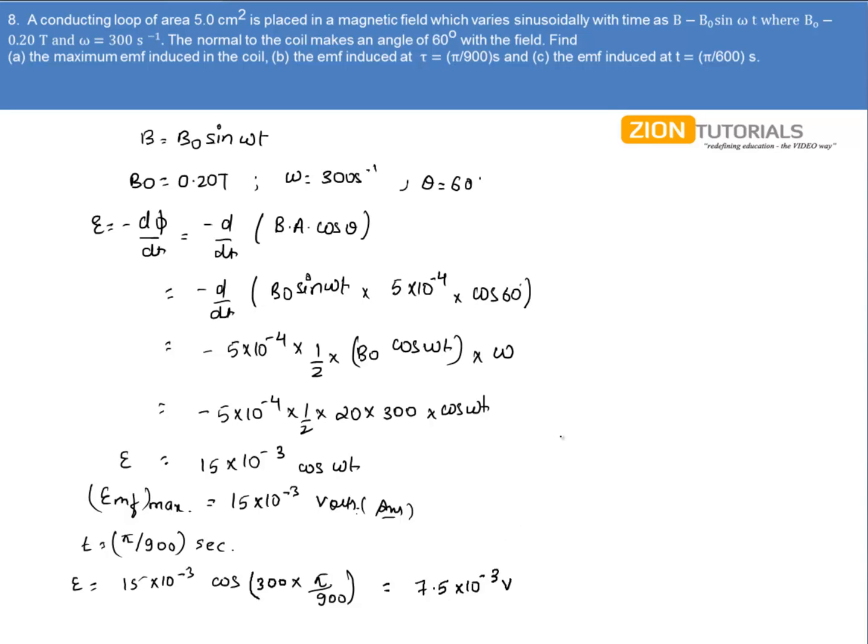In the last part we have to calculate the EMF induced at t equal to π/600 seconds. Again substituting the value of t in the EMF expression, that is 15 × 10⁻³ cos of ω, again that is 300, into π/600, which comes out to be 0 volts. That is the answer.